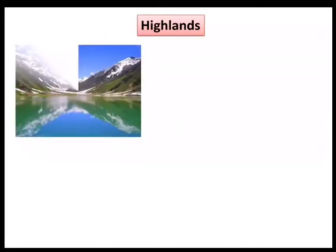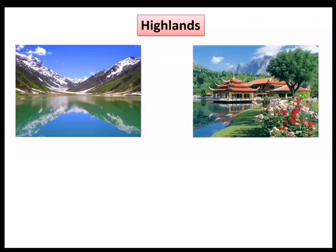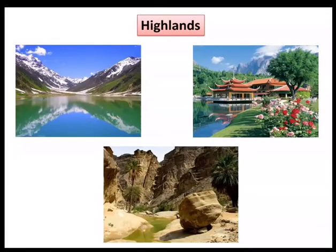Highlands are mountainous areas. The mountains in the northern part of the country are part of the Himalayan and the Karakoram ranges. These mountains fall into the highland regions. Along with the mountains in the west of Pakistan, this region has long winters with heavy snowfall.